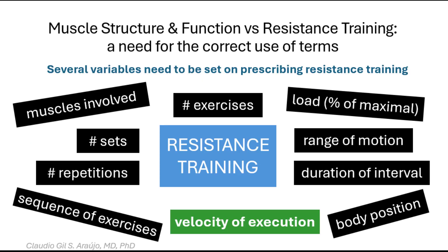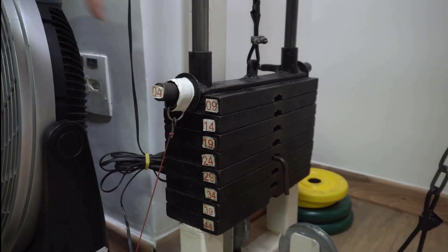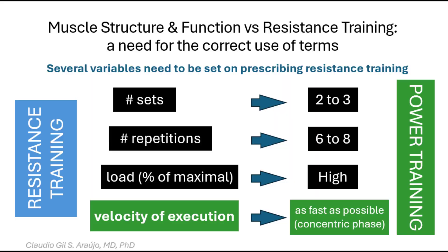For example, for resistance training targeting muscle power, velocity of execution is a key issue. The prescription should include two to three sets of only six reps with relatively heavy loads, moving as fast as possible in the concentric phase.